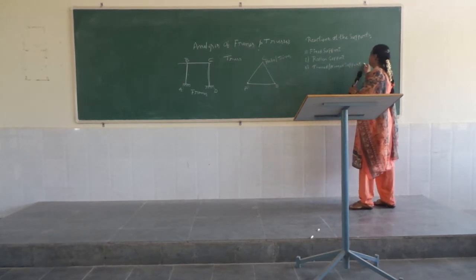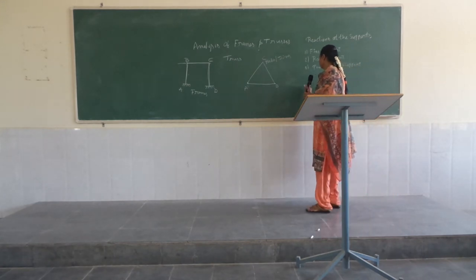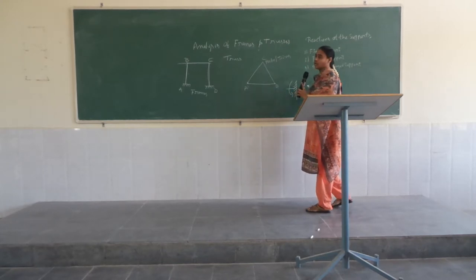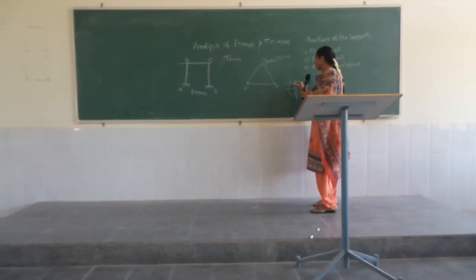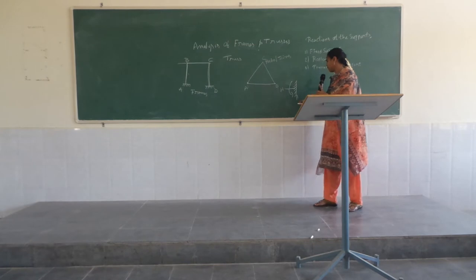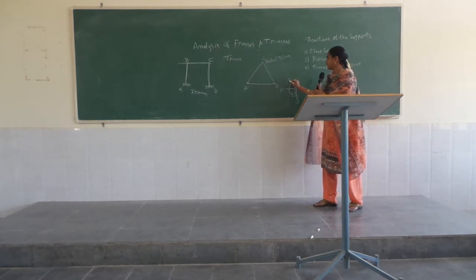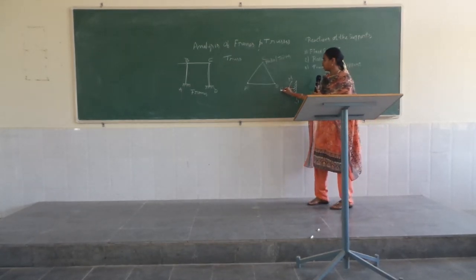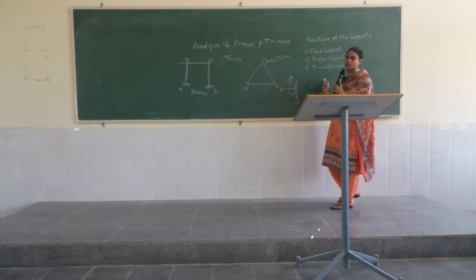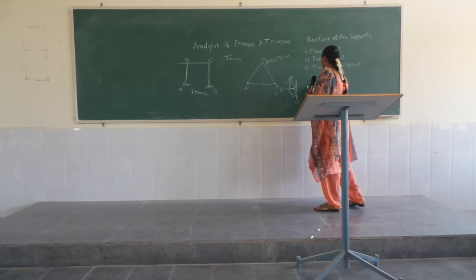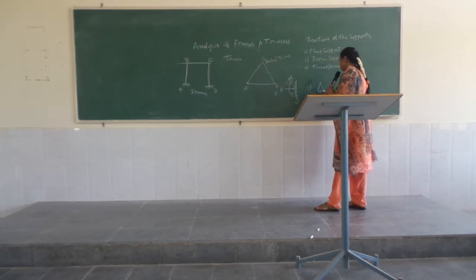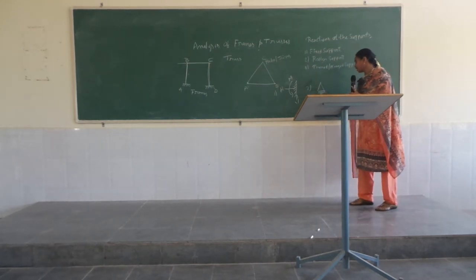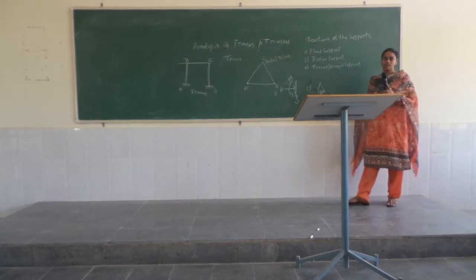So these are explained using examples. First one: fixed support. In the fixed support, there are three unknowns. It is restrained in the horizontal direction, the vertical direction, and in the moment. So in the fixed support, it is restrained about all three — horizontal, vertical, and moment. Second one: roller support. In the roller support, it is restrained only in the vertical direction and it does not have horizontal or moment reactions.